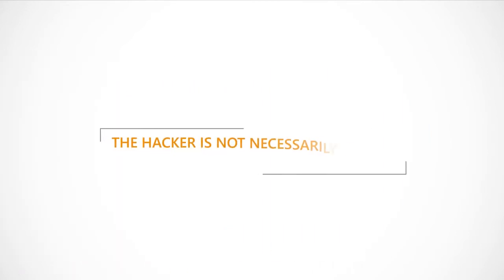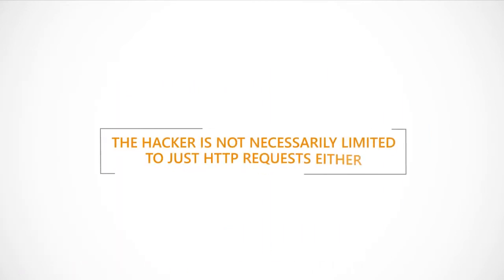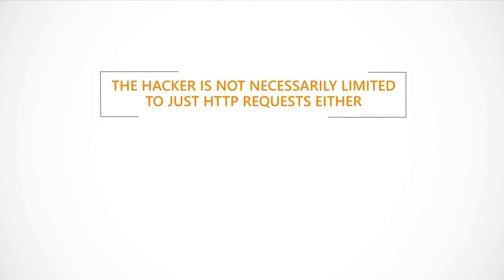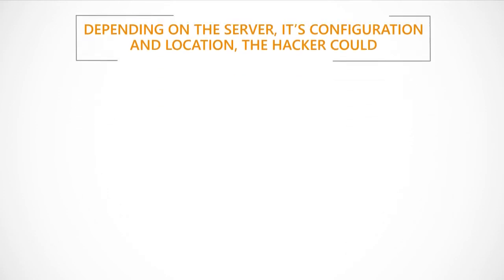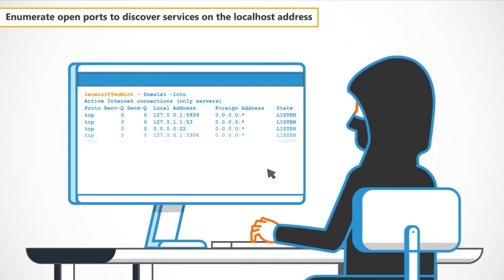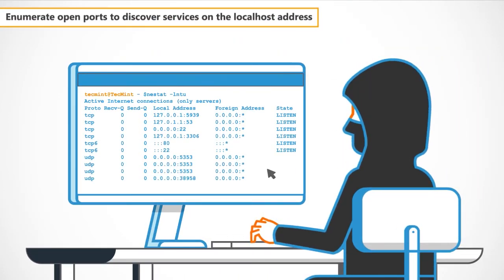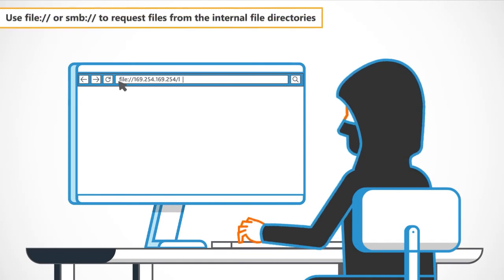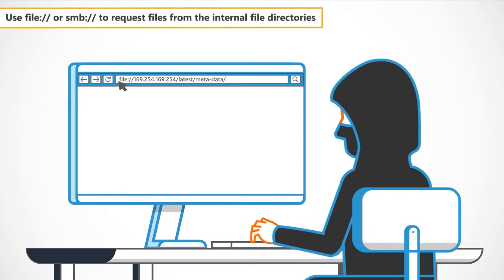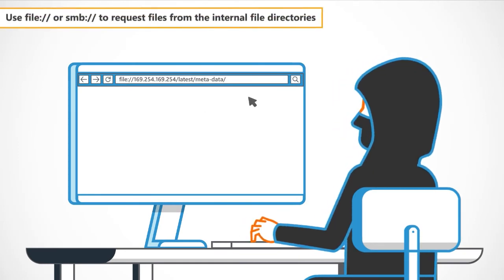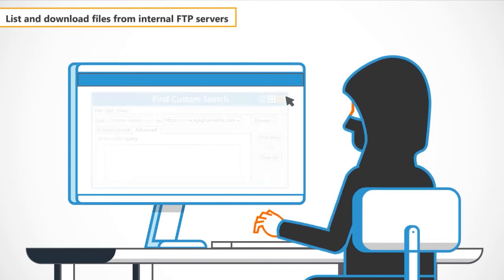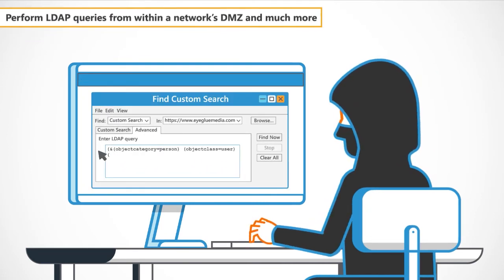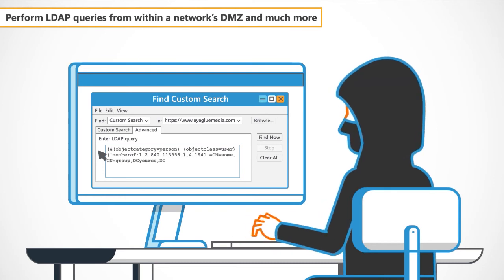The hacker is not necessarily limited to just HTTP requests either. Depending on the server, its configuration and location, the hacker could: enumerate open ports to discover services on the local host address; use file or SMB to request files from the internal file directories; list and download files from internal FTP servers; and perform LDAP queries from within a network's DMZ.